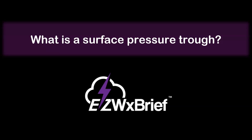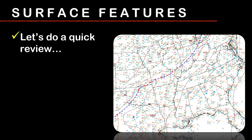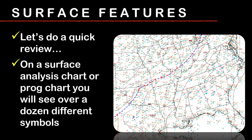I want to specifically talk about a surface pressure trough. It's probably one of the most common questions I get on these charts. People see a dashed line and don't really know what that means. But first, let's do a quick review of some things we've talked about already in relationship to what you see on the surface analysis or even the prog charts. On these charts, you're going to see over a dozen different kinds of symbols, and each symbol has a specific meaning that may or may not be important to you, depending on the situation.